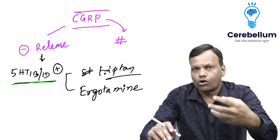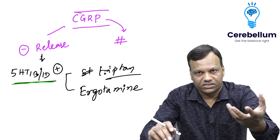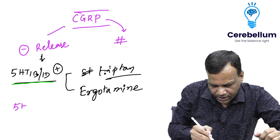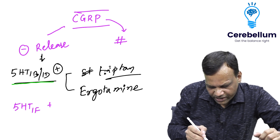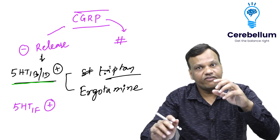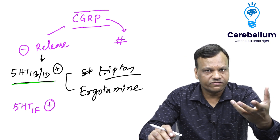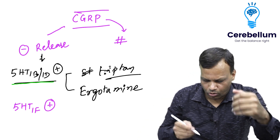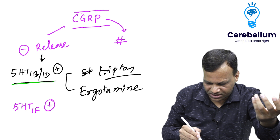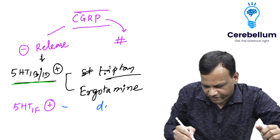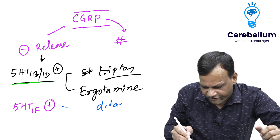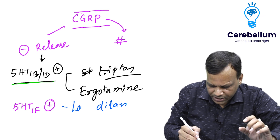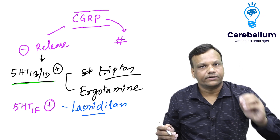That vasoconstriction can result in coronary vasospasm. To prevent that side effect, we have recently developed a new group of drugs called 5HT1F agonists. They also inhibit the release of CGRP but do not cause vasoconstriction, so no coronary spasm is seen. Drugs that are 5HT1F agonists have names ending in '-ditan', and one example is lasmiditan — this is a new drug.